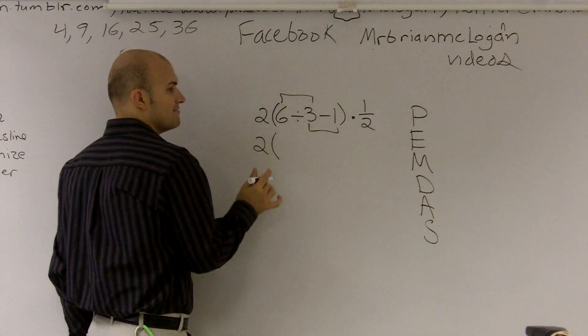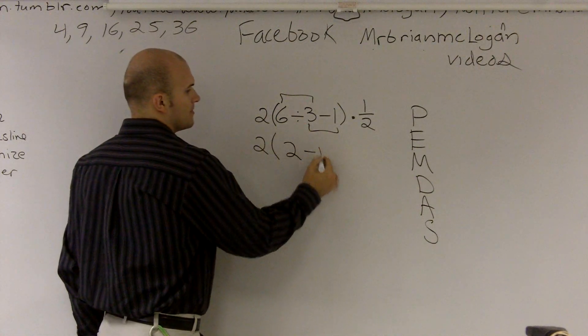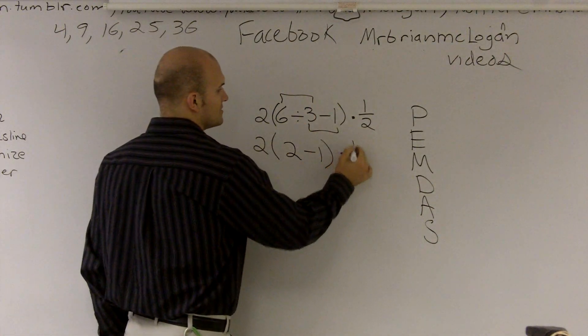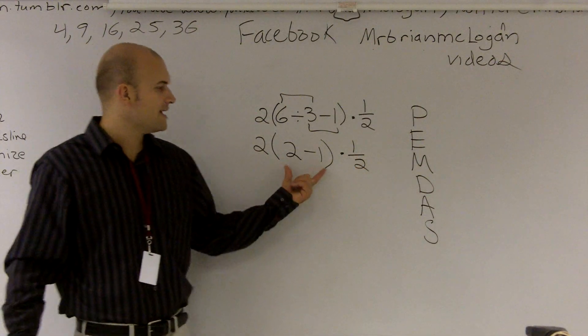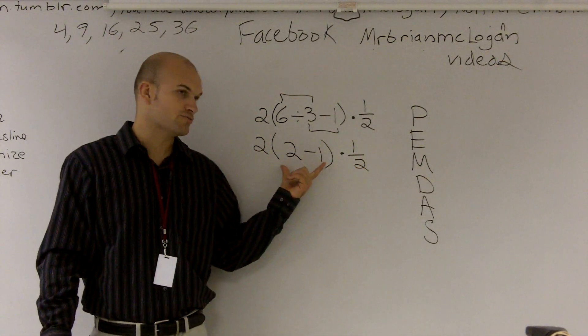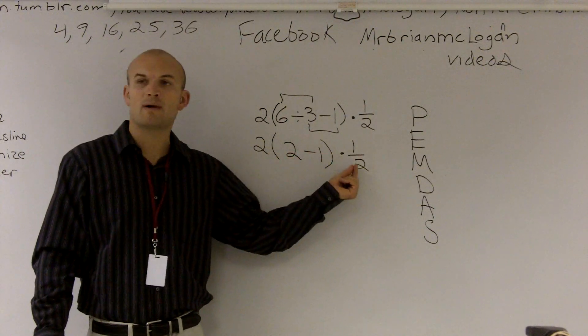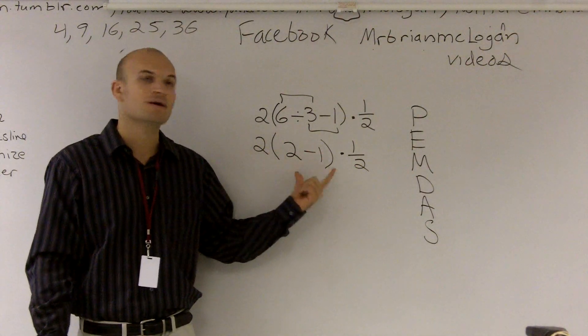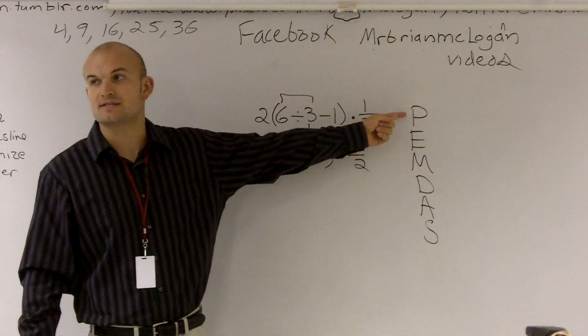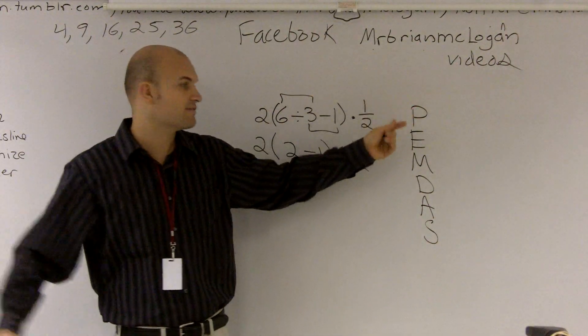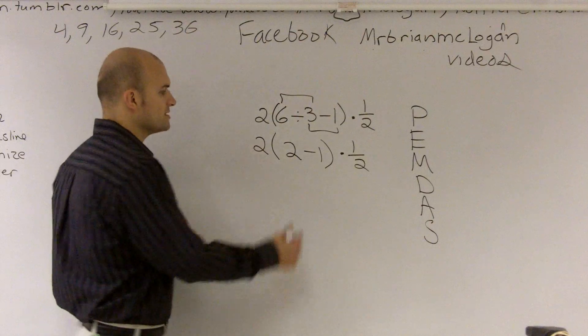So I have 6 divided by 3, which is 2, minus 1, now times 1 half. Now what we're going to do is the subtraction of 2 minus 1. We're going to do this before we multiply by 1 half because it's within the parentheses. That always trumps everything. Therefore, 2 minus 1 is going to be 1.